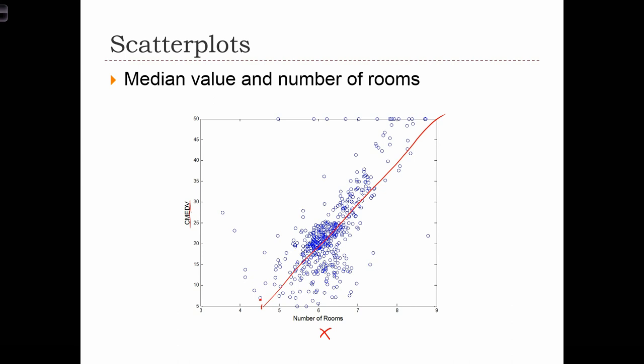We can discuss whether or not this is a strong relationship, but it's hard to do that just with a scatter plot alone. If we had three different scatter plots of three different x variables, we might be able to say which variable looks like a stronger relationship. But by itself, it's quite hard to determine the strength of this relationship, which is precisely why we're going to use a statistic called the correlation statistic to quantify the strength of this relationship objectively.